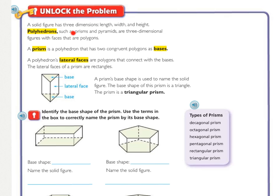Polyhedrons, such as prisms and pyramids, are three-dimensional figures with faces that are polygons. Polygons are what we've been working on in our last few lessons. They only have length and width. Polyhedrons also have a third one, which is the height.